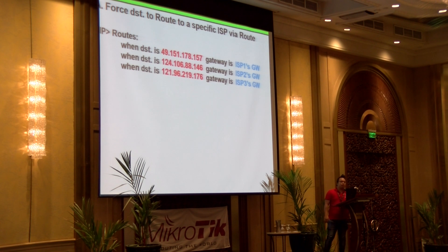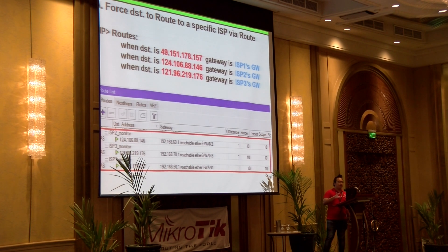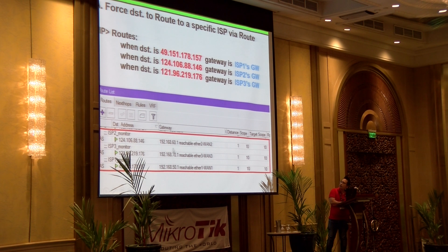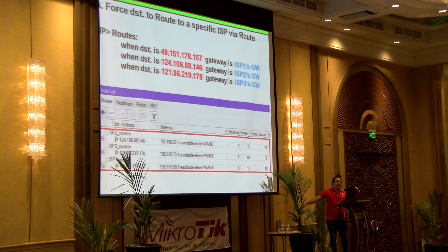So when the destination is 49.151.178, it will go out of ISP1's gateway — this is the universal one. 124 goes to ISP2 gateway, and 121 to ISP3 gateway. In the lab setup using 50, 60, and 70: when you go for 49, you go out of 50; when you go for 121, you go out of 70 because that's ISP3; and 124 for ISP2 monitor should go out of 60. So I forced those IPs to go out of those three different ISPs using static routes.